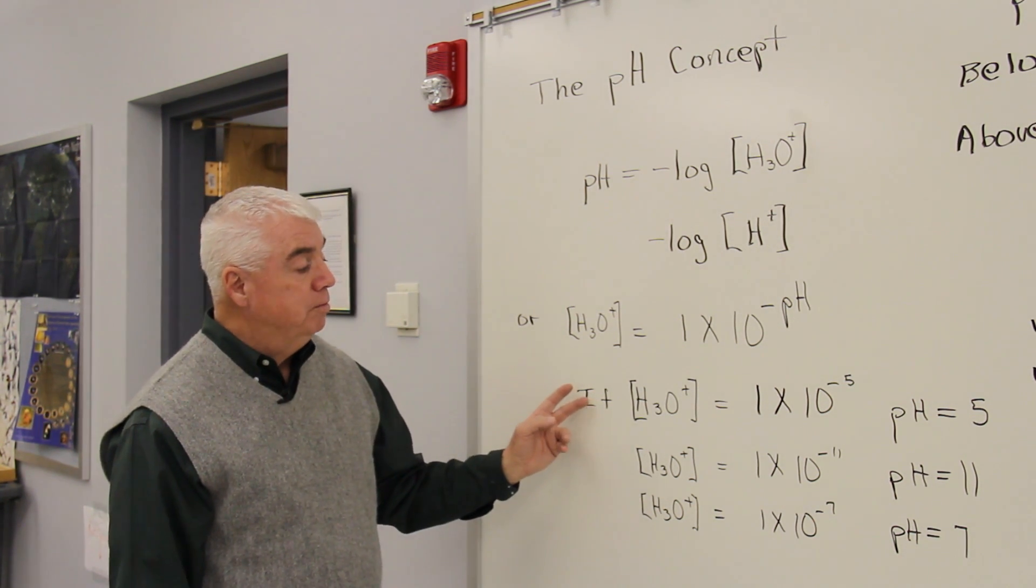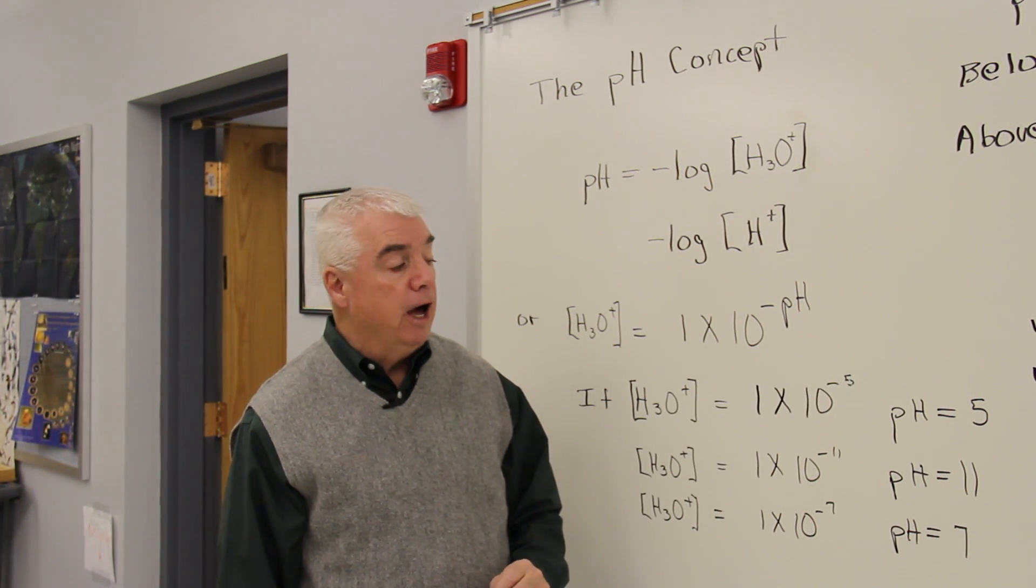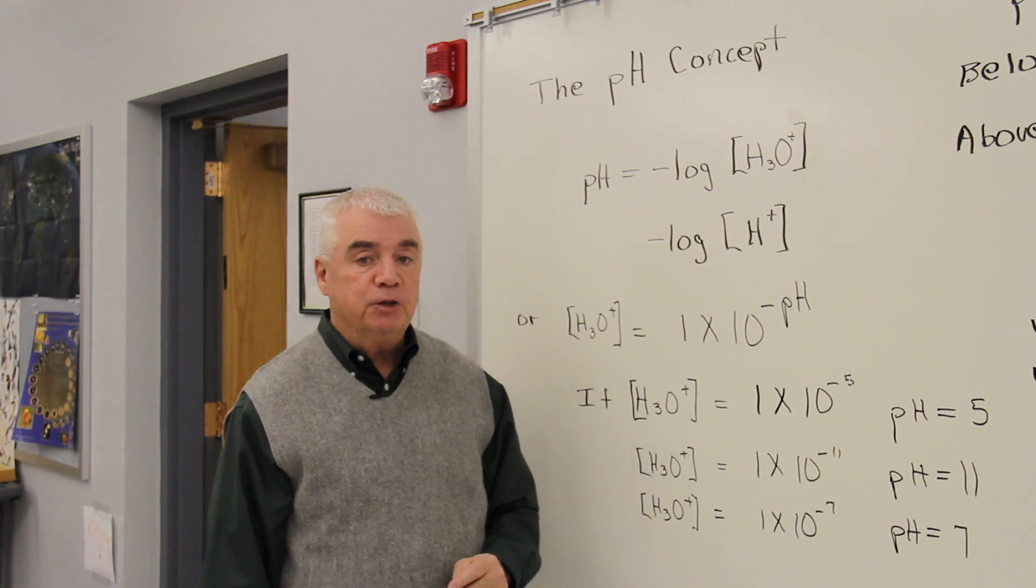For example, if you have an H3O plus concentration of 1 times 10 to the minus 5 molar, the pH is simply that number. pH is 5.